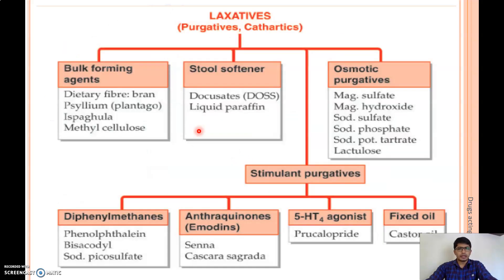Coming to the classification of laxatives, purgatives, and cathartics, they are mainly classified into four groups: bulk forming agents, stool softeners, osmotic purgatives, and stimulant purgatives.